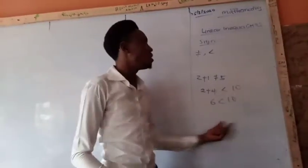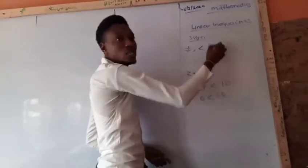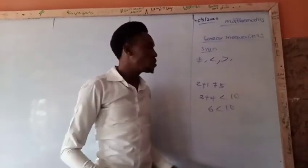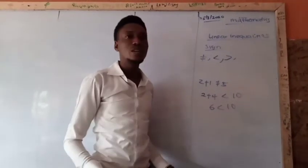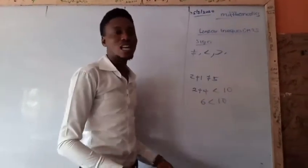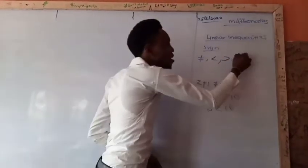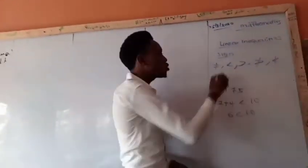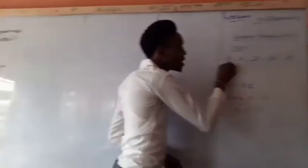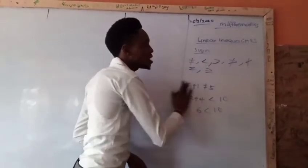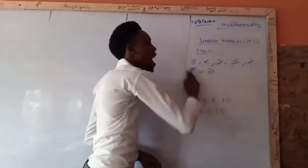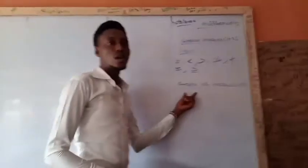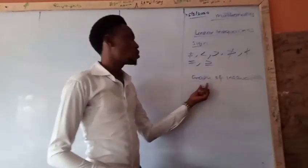These are signs of inequality. Another sign is 'greater than,' which simply means one quantity is greater than another. We also have 'not greater than,' 'not less than,' 'less than or equal to,' and 'greater than or equal to.' All these signs are signs of inequalities.